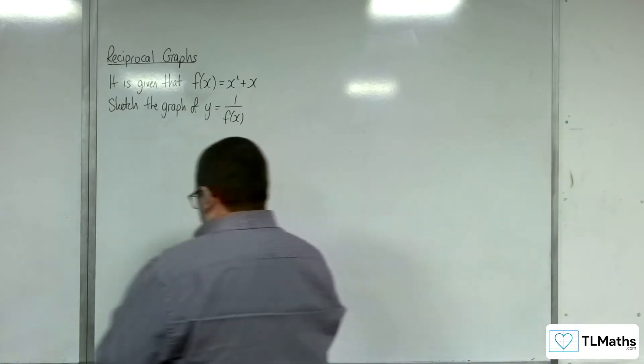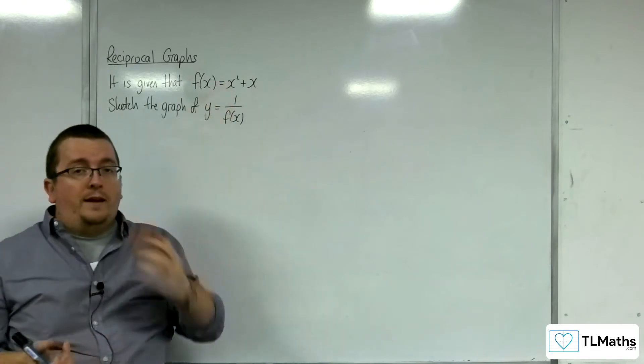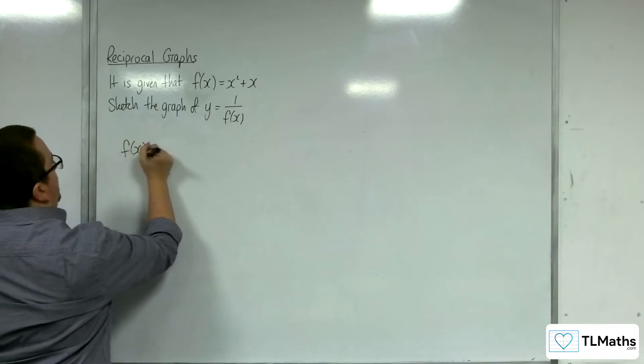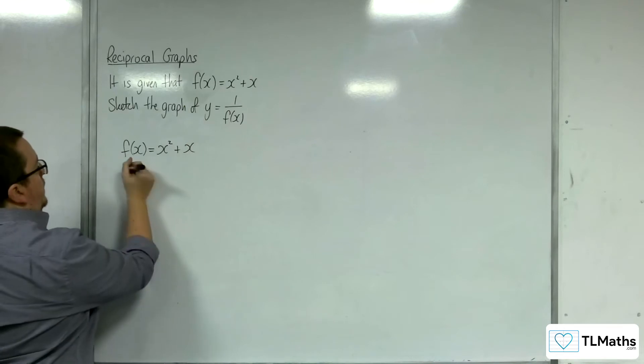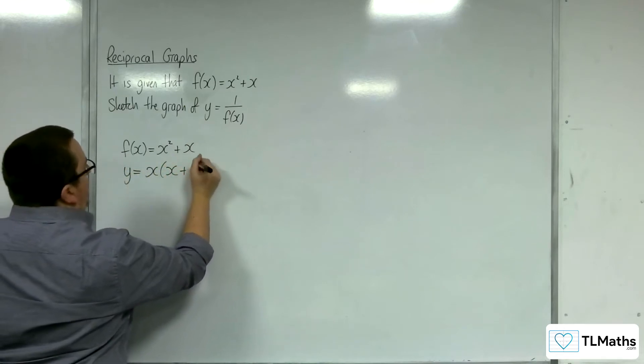First thing I would do is sketch f(x) = x² + x. So y is equal to—I'm going to factorize that to get x(x + 1).